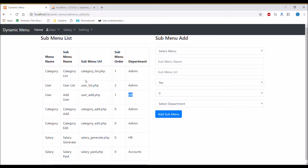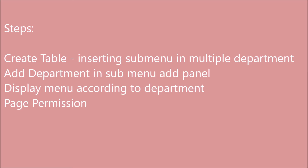In this video I'll show you how to add one menu to multiple departments. The steps I'm going to take are: first, create a table to store which menus are in which department; second, add department to the sub-menu add panel; third, display menus according to department; and last, page permission.